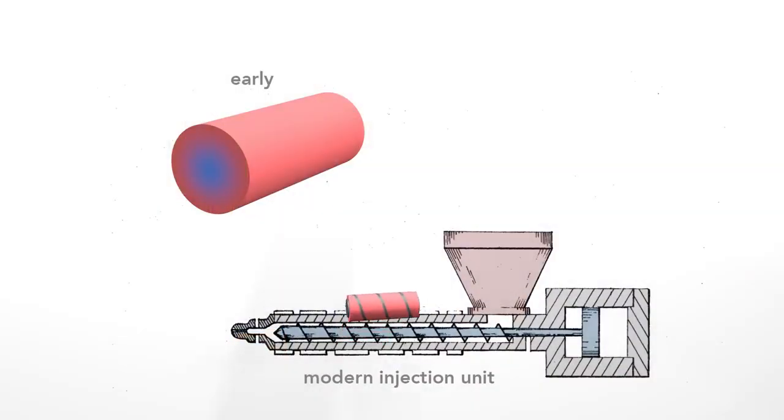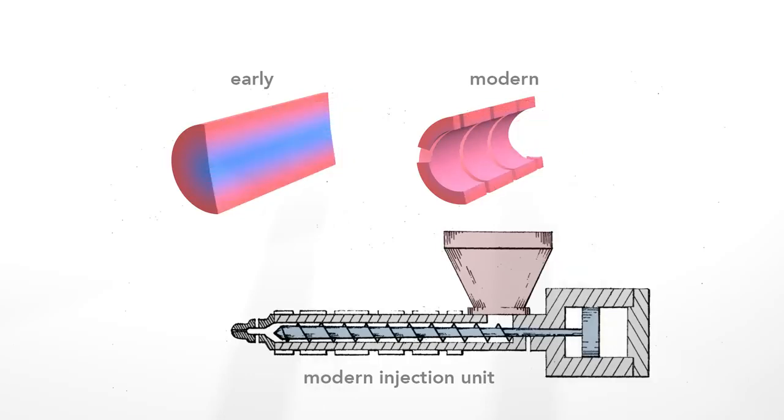The reciprocating screw overcomes this in three ways. First, in modern units, the plastic fills only the space around the shaft of the screw. This eliminates the cooler central region, leaving a thinner, evenly heated layer of plastic.